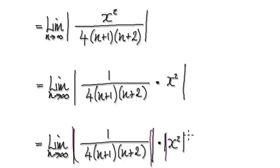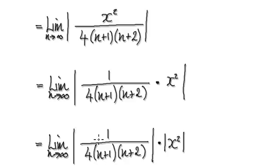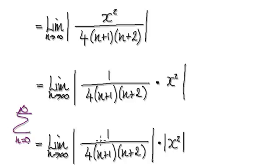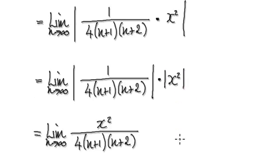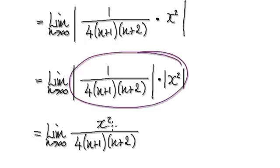Now you would break the two apart, so this whole thing becomes this — that's the same as the absolute value of 1. When you take the absolute of x squared over 4·(n+1)·(n+2), you should realize that n is always positive — n is moving from 0 to infinity — so it's pointless taking the absolute since it will always be positive. And x squared will always be positive as well.